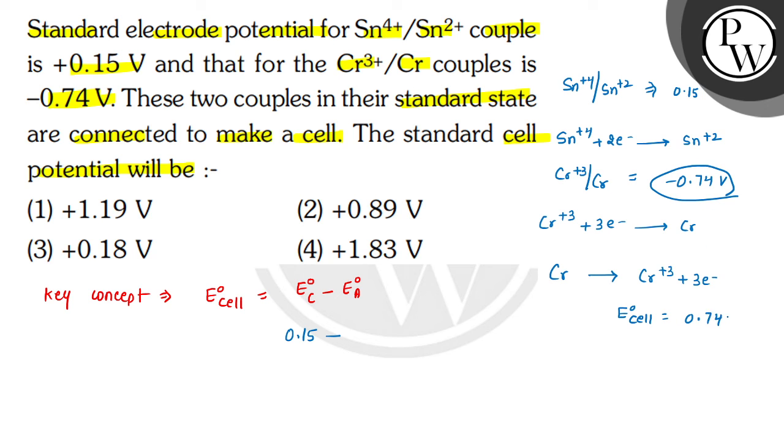So it is 0.74 V. Here we can convert this as 0.15 minus negative 0.74 V, so this value will be positive 0.89 V.